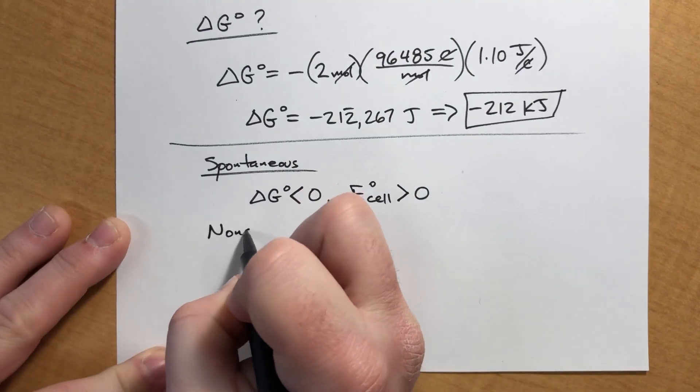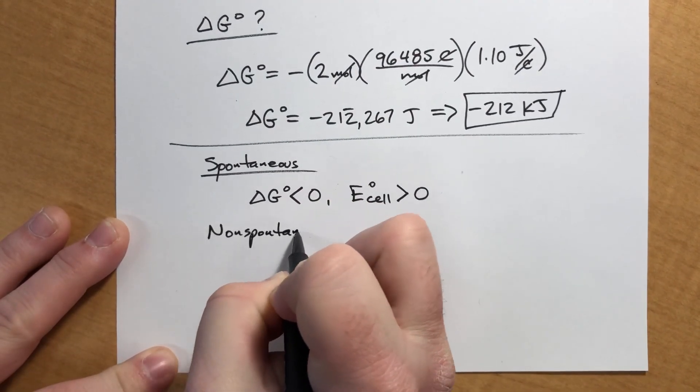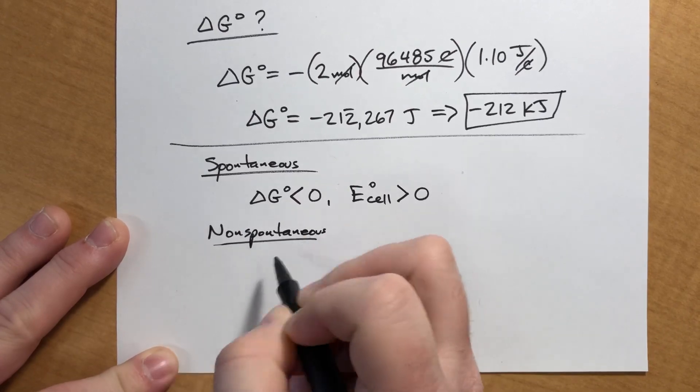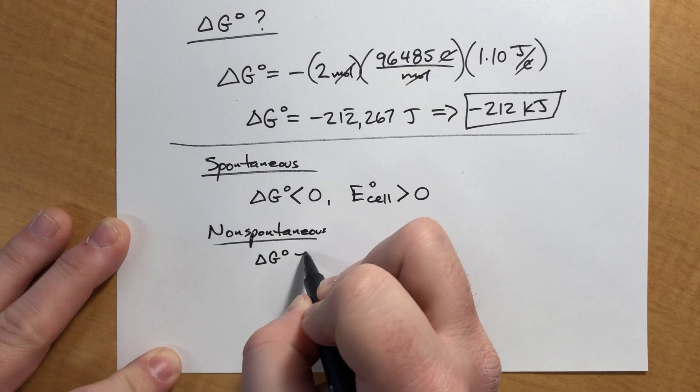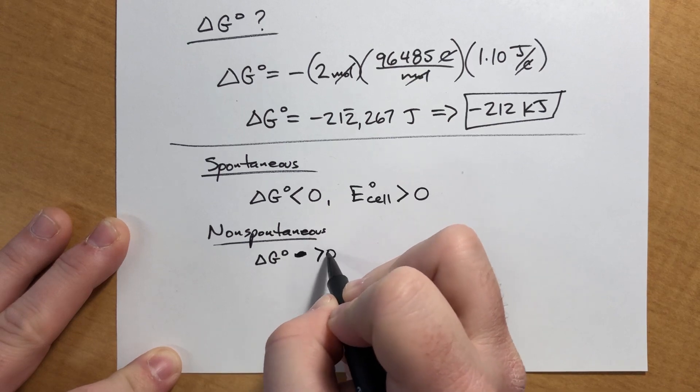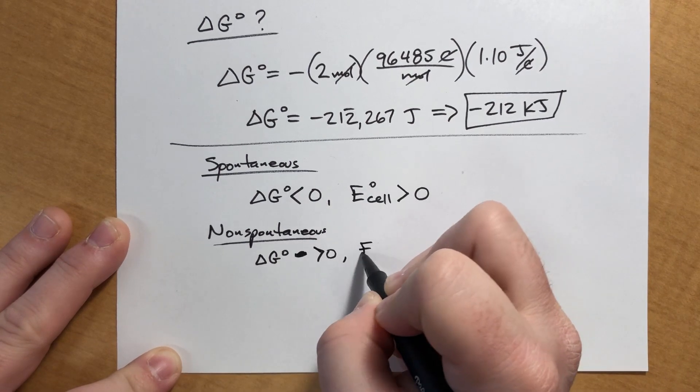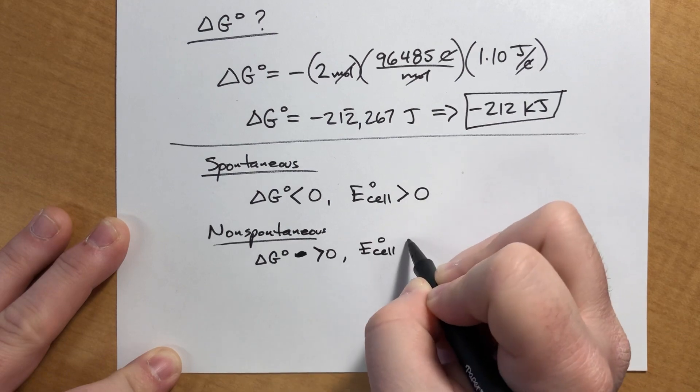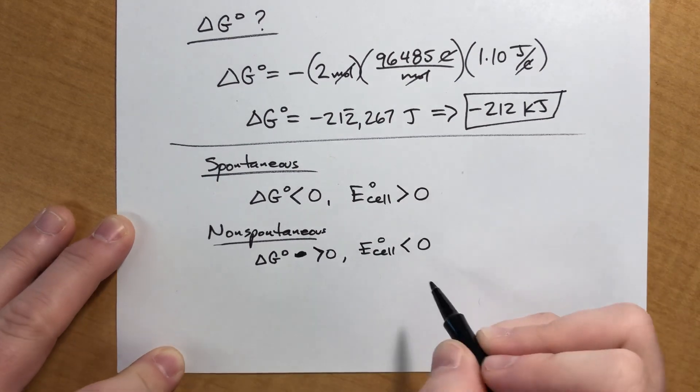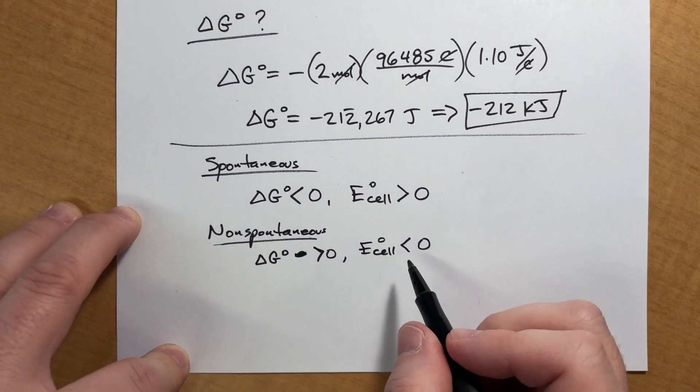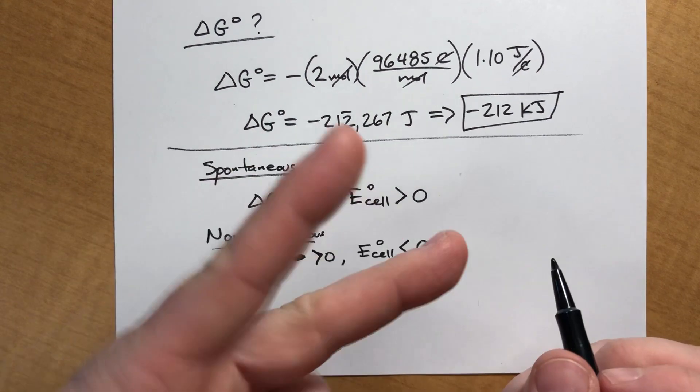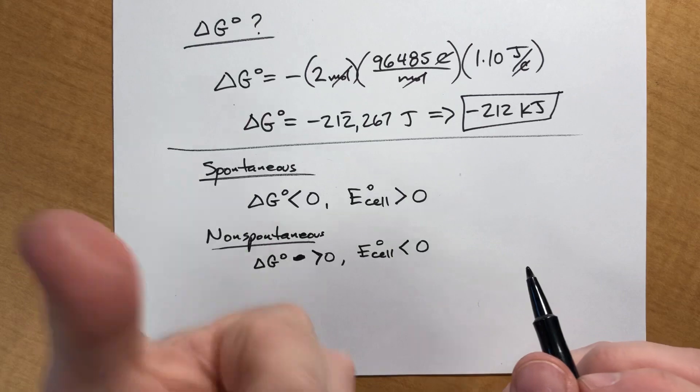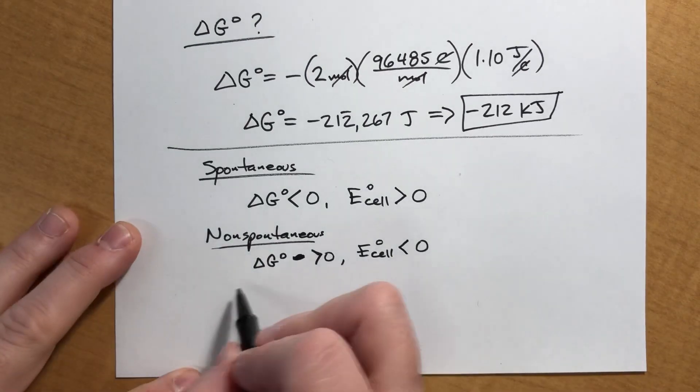If you have a reaction that is non-spontaneous, we expect the opposite of this. Delta G will be greater than zero and E sub cell will be less than zero. So if the voltage is negative, honestly, all that really means is that you've screwed up and that your cathode and anode need to be switched. It's just spontaneous in the opposite direction.